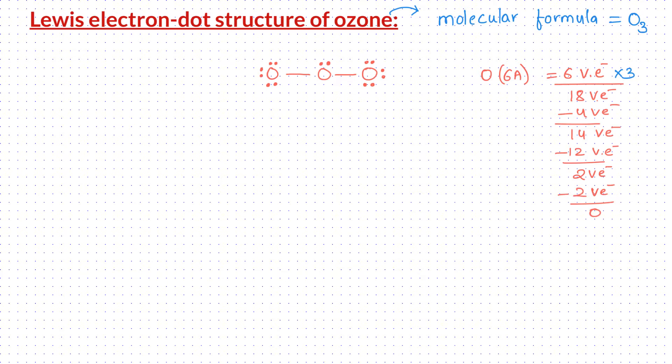We used up all the electrons. Let's verify if each of the atoms is an octet. Both the terminal oxygen atoms are octet. However, the central atom is short of 2 electrons to attain an octet configuration. That means we need to transfer one of the electron pairs from the terminal atom as a multiple bond between the central atom and the respective terminal atom.